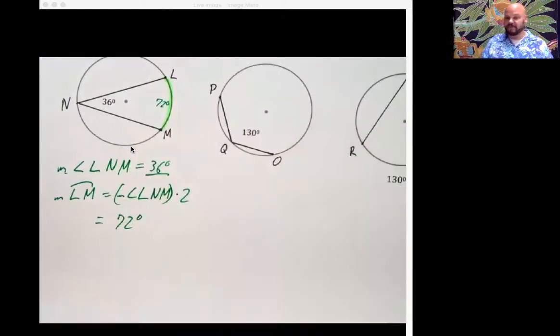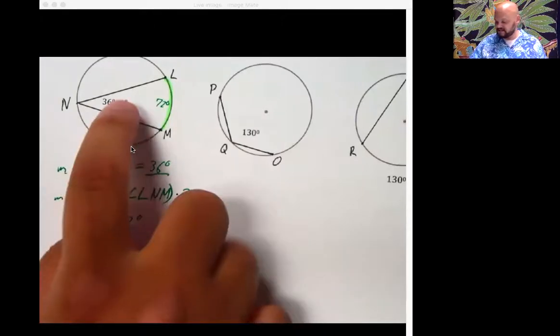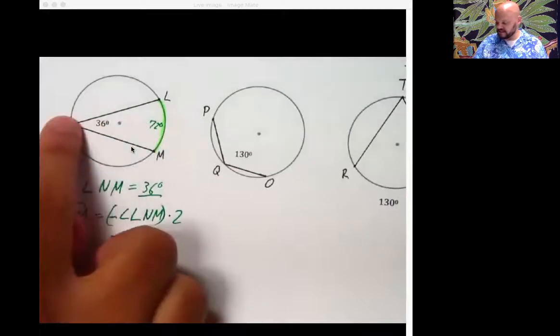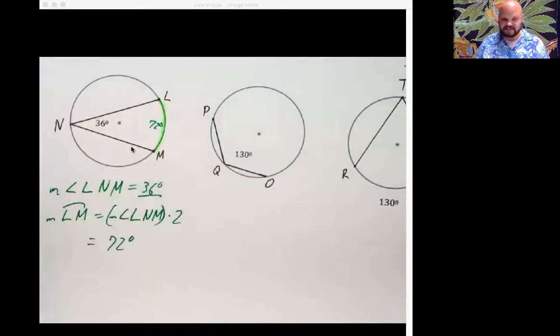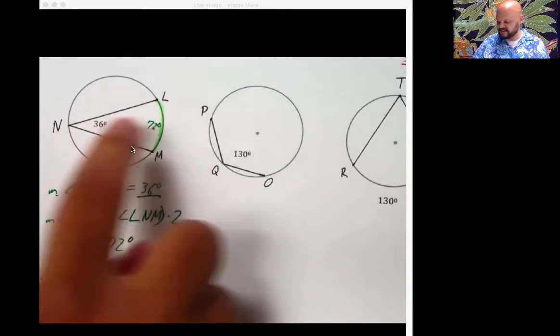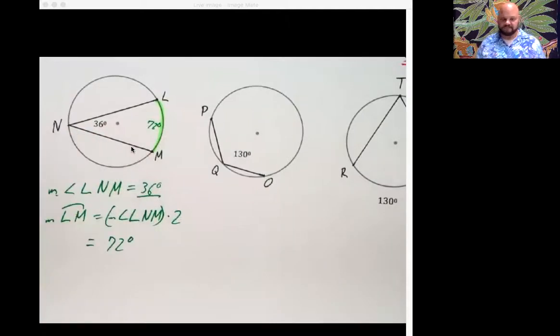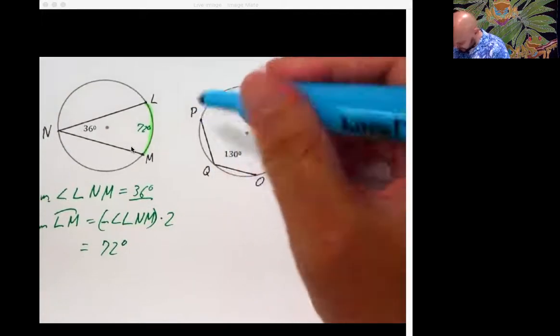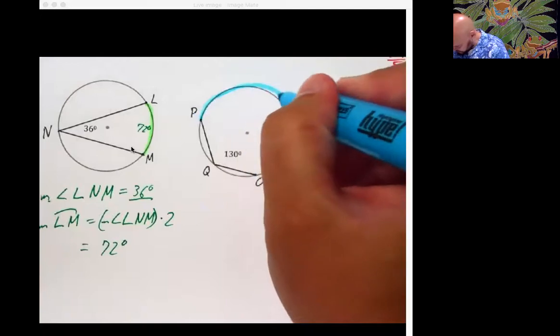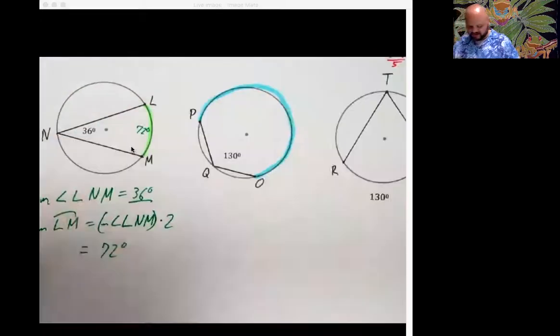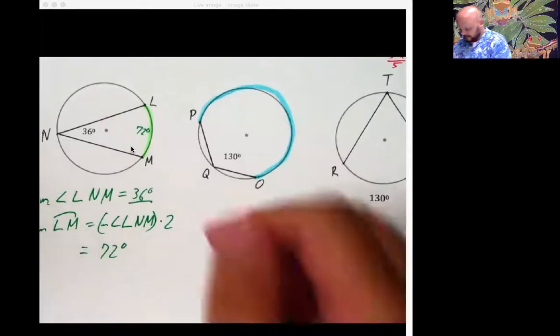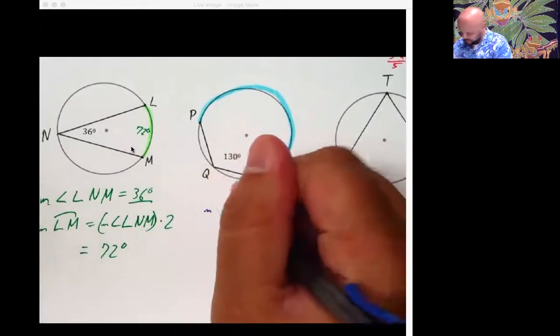So literally, folks, we've got one of two things happening. Either it's in the center and it's equal. Or it goes all the way to the side and it's two times as big over here as it is right here. That's all. So check this out. We got this one now. And we've backed up this 130 degrees into a corner. And we're trying to find this bad boy right here. This whole big arc measure.